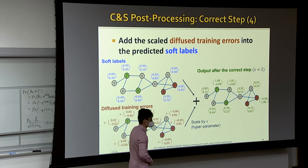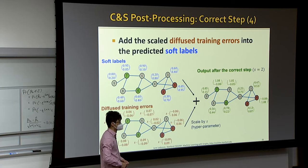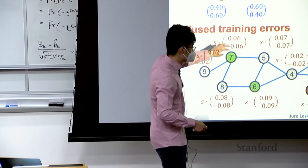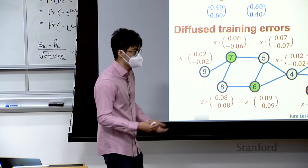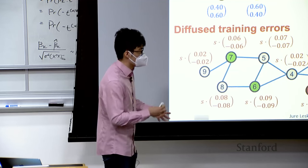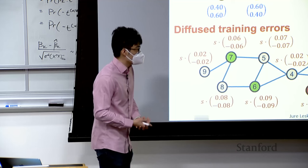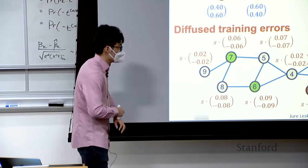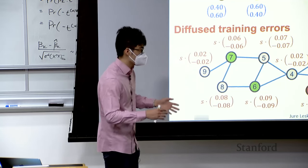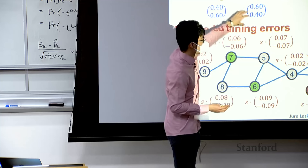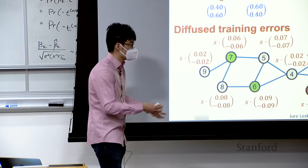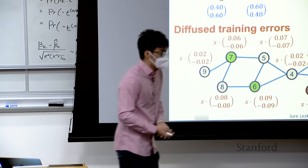A student suggests combining labels directly into GNN message passing. The advantage of C&S's approach is that it's fully model-agnostic — you can choose any base predictor, make first-round predictions, then update them. This is a key reason for C&S's popularity. A student asks about applying this to graph classification. For graph classification you always apply to a new graph without ground truth, so error propagation isn't directly applicable. However, you could propagate features within the training graphs as a similar but distinct strategy.